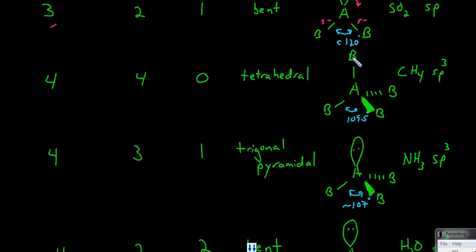What if you have four bonded atoms around the central atom and zero lone pairs? There are a total of four things around the central atom. This causes all four things to go into three dimensions to maximize the distance between the bonds. We have a tetrahedral structure where regular lines are in the plane of the board, the bolded line is coming out toward you, and the dashed line is going into the board — further from your eye.